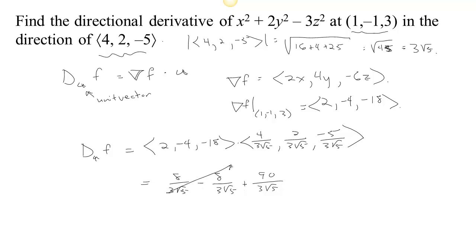These two cancel, so that just leaves us 90 divided by 3, that's 30 over root 5. It might be nice to rationalize the denominator, if we multiply top and bottom by root 5, we get 30 root 5 over 5, and 5 goes into 30 six times, so we get 6 root 5. That's a little bit prettier if we rationalize the denominator for that directional derivative.